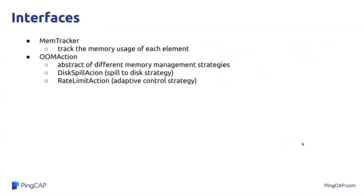Now, let's dive into the implementation in TIDB. In TIDB, we introduce two interfaces called memTracker and OOMAction. The memTracker is used to track the memory usage of each element. The OOMAction is used to abstract the strategies to be used when the memory usage of a SQL exceeds the memory quota. For example, we define the spill-to-disk strategy as a disk-spill action and define the adaptive control strategy as a rate-limit action.